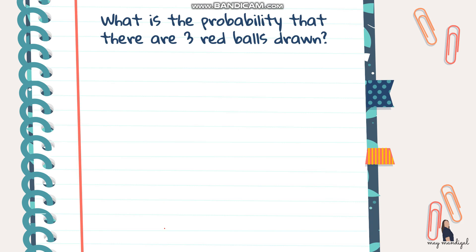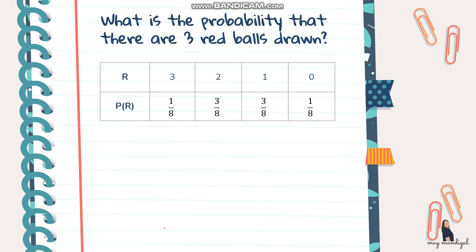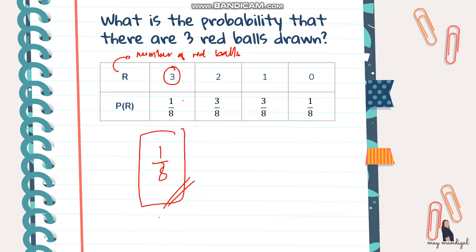Now let's answer some questions using the table. First, what is the probability that there are three red balls drawn? Since R represents the number of red balls, we look up R = 3 in our table. The probability is 1/8. Therefore, P(R = 3) = 1/8.